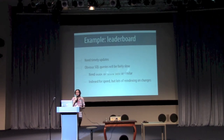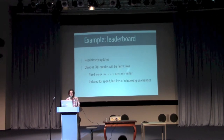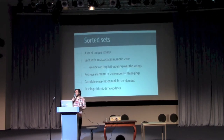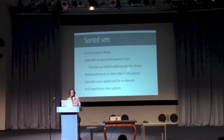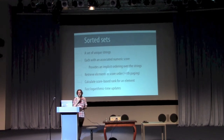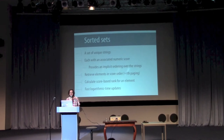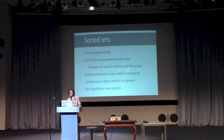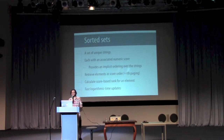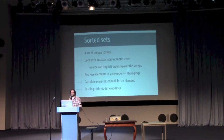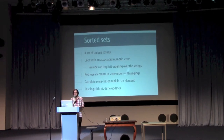So how can Redis help? The obvious approach is to use the sorted set data type. I think this is one of the most interesting and unusual parts of Redis. A sorted set has two parts: a set of unique strings, and each string has an associated numeric score. Crucially, you can treat the scores as providing an ordering over the strings. This means you can retrieve elements in score order, paging through them if necessary, and you can also calculate the rank for a particular element — its position in that score-based ordering. All of this is really fast. All the important operations take logarithmic time, including insertions, deletions, and score updates. Internally, Redis uses a hash for the set and a skip list for ordering the elements by score.